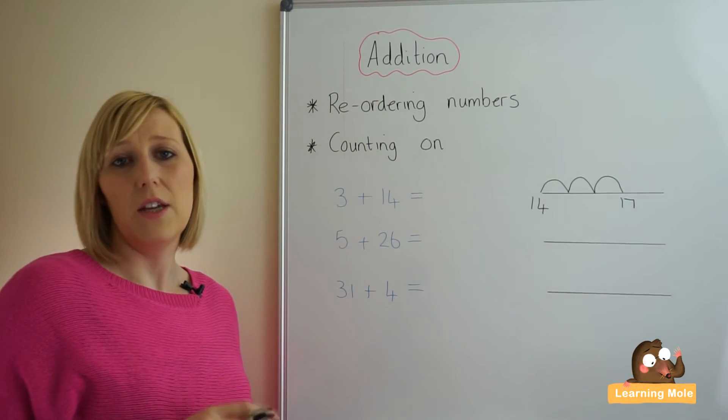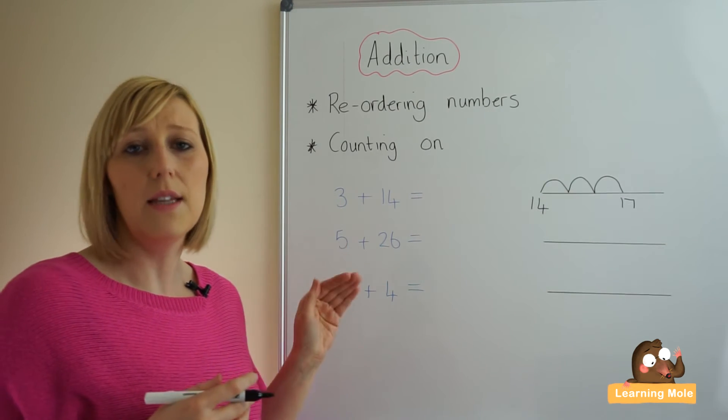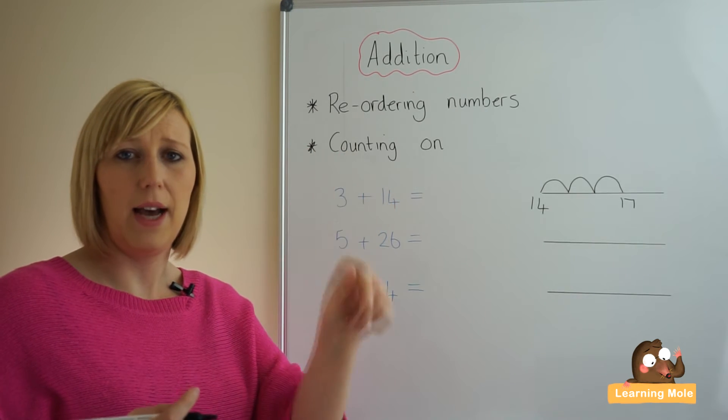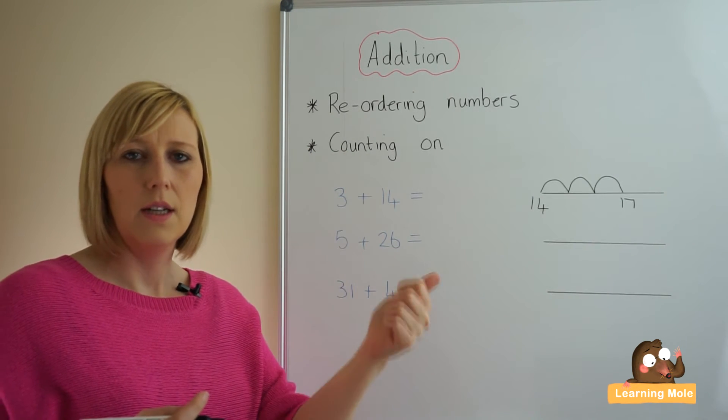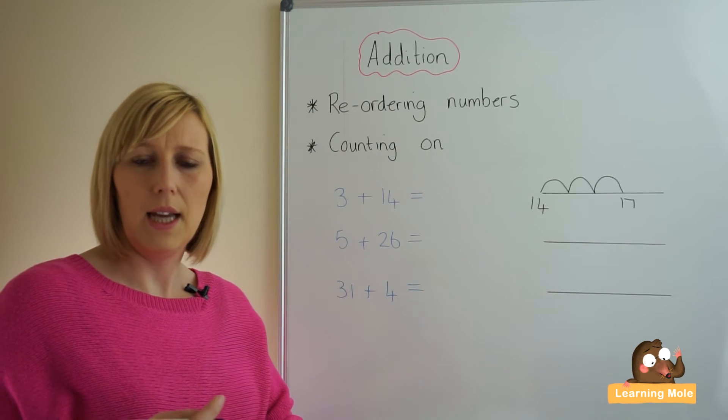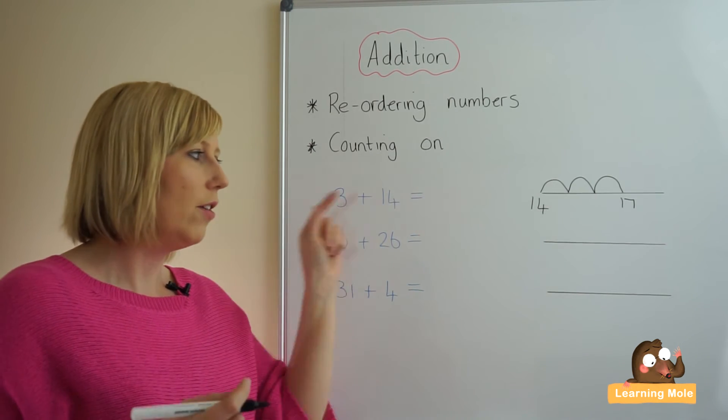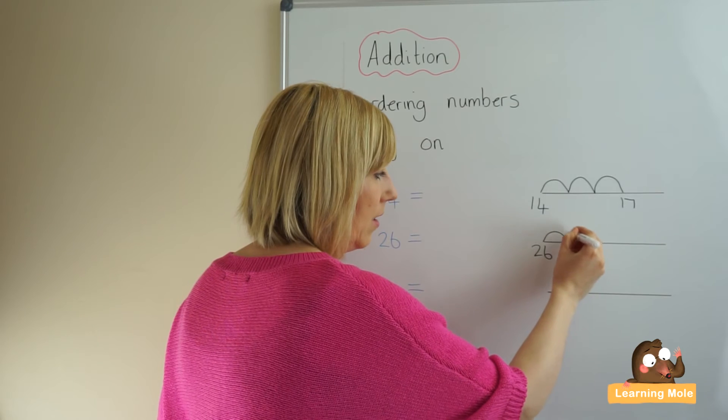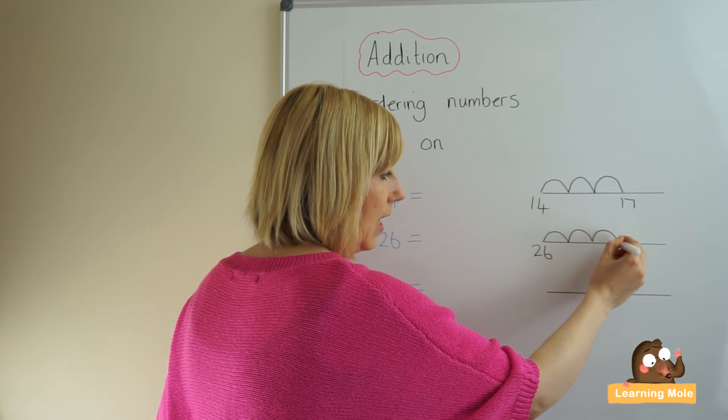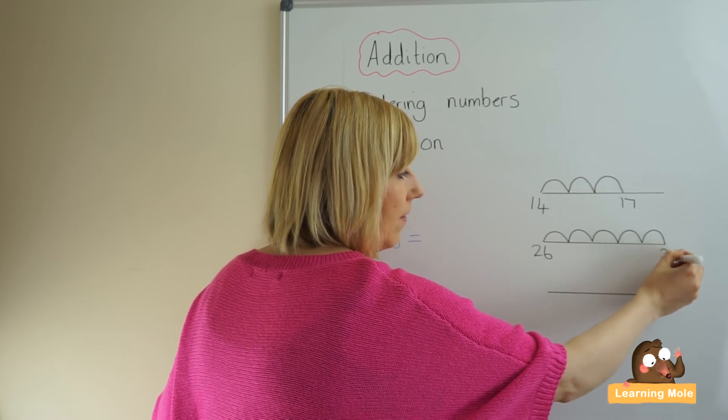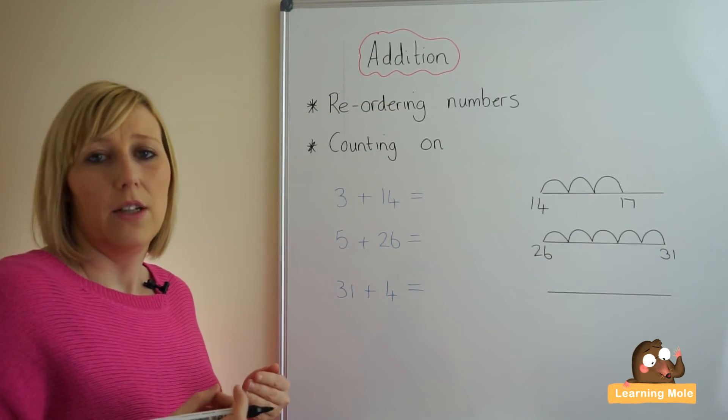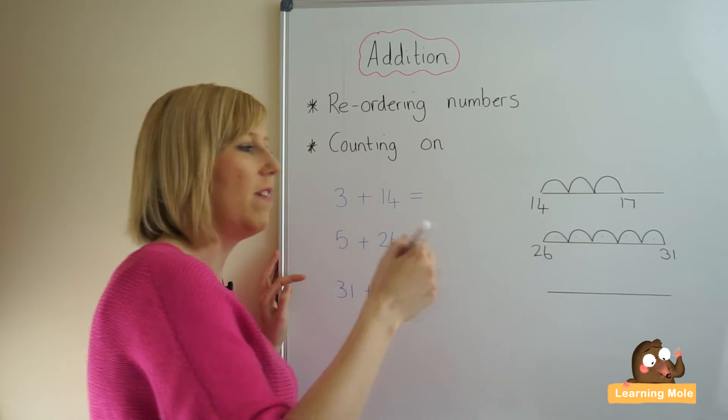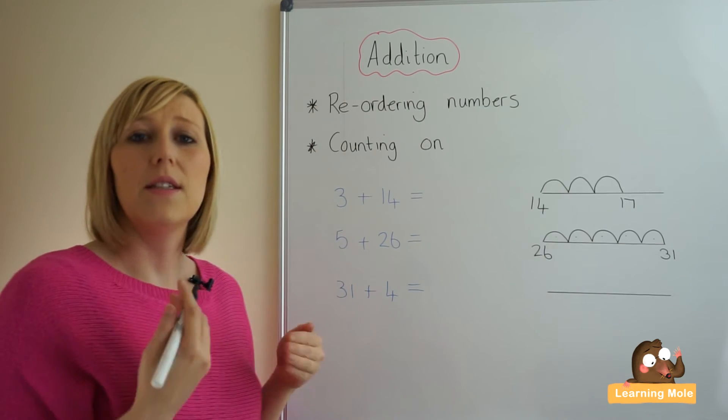We move on to the next calculation and we've already ascertained that we want to reorder this so that we put the biggest number first which is 26. 26 in our heads counting on 5: 26, 27, 28, 29, 30, 31. And on our blank number line we put the 26 at the beginning: 26, 27, 28, 29, 30, 31. And even if you want to, when you've got that recording on the blank number line you can actually go over it and check that you've actually got it. So we've actually done the 5 jumps: 1, 2, 3, 4, 5, and we count again if there is some inaccuracy there.